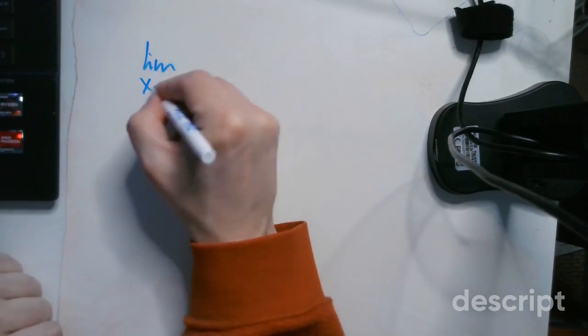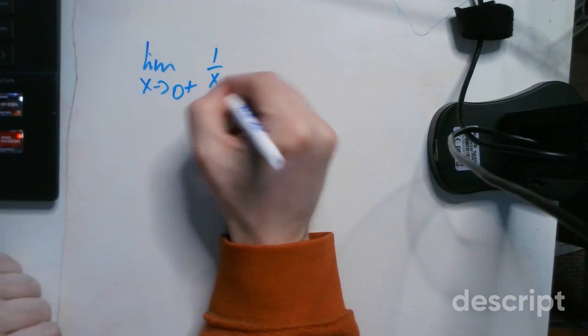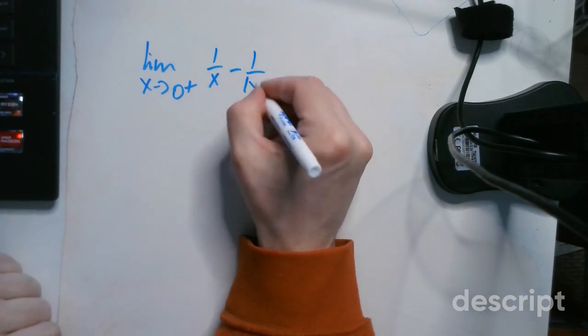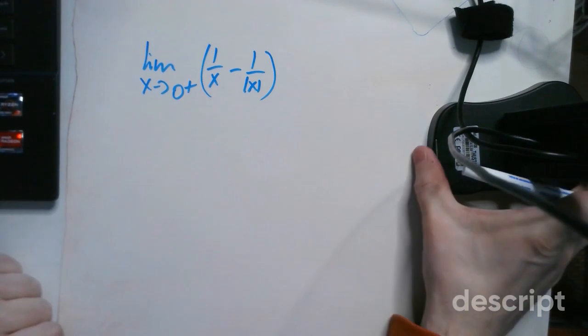So we have the limit here as x approaches 0 from the right side: 1 over x minus 1 over the absolute value of x. This is a single expression and I'm going to find this limit.